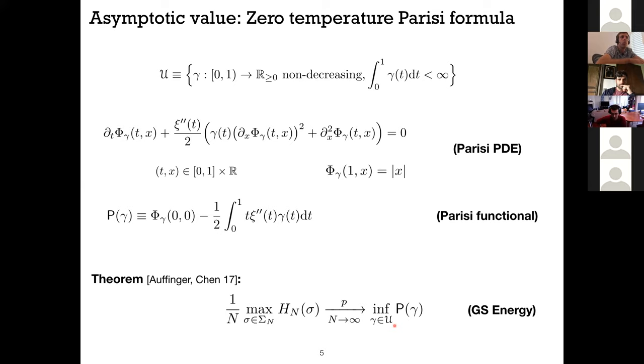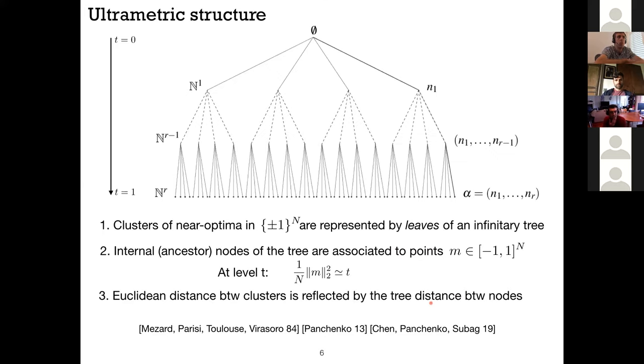Now there's a theorem that tells you that the maximum normalized by n will converge to the infimum of the Parisi formula over all of this class. So this is a variational problem that you get in the limit. The first thing that you think when seeing this kind of formula is how are these two things related? So this is a maximum, this is an infimum, but they don't look like they come from two different planets, right? So we'll try to shed some light on this question.